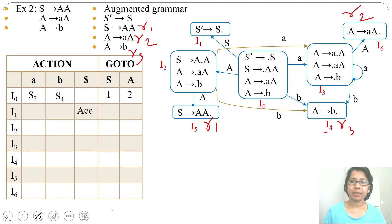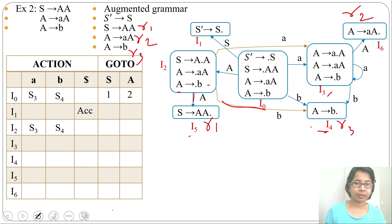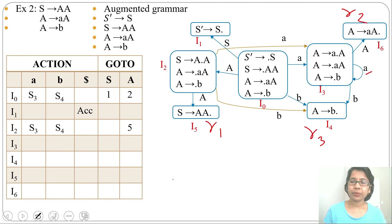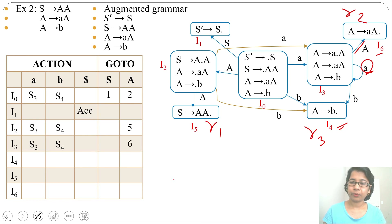I1 is accept, so write 'accept' in the dollar column. For I2: by terminal a it goes to I3, write S3; by terminal b it goes to I4, write S4; by variable A it goes to I5, write 5 in the A column. For I3: by terminal a it goes to I3 (self-loop), write S3; by terminal b it goes to I4, write S4; by variable A it goes to I6, write 6 in the A column.